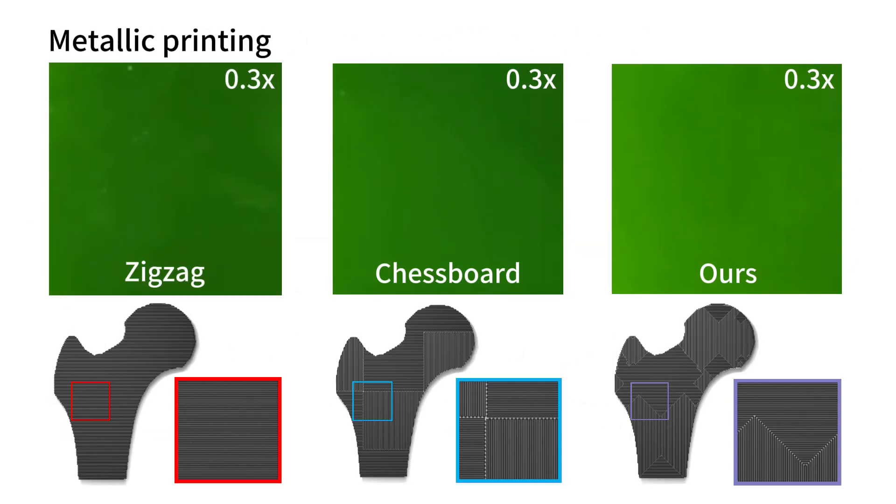Here shows the metal printing process of the femur model by different toolpaths, including zigzag, chessboard, and the path generated by our Q-learning-based planner.